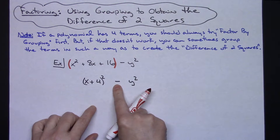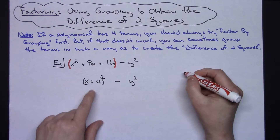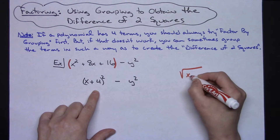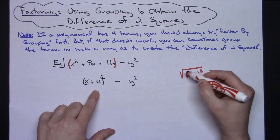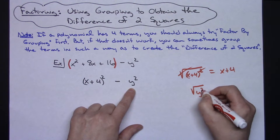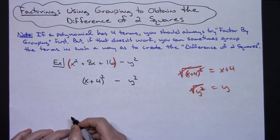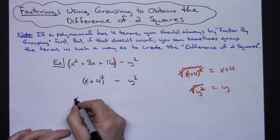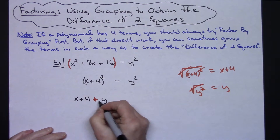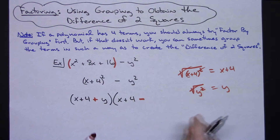Now if you look at this, I have a minus sign and two terms that are perfect squares, so that means I can factor this as the difference of two squares. I need to take the square root of the first term and the square root of the second term, and write them both with a plus and a minus. The square root of the x plus 4 quantity squared — since square root and square undo each other — gives me x plus 4. And the square root of y squared gives me y.